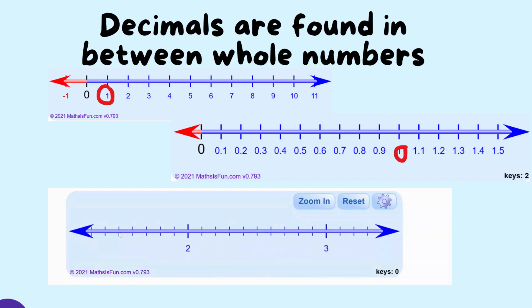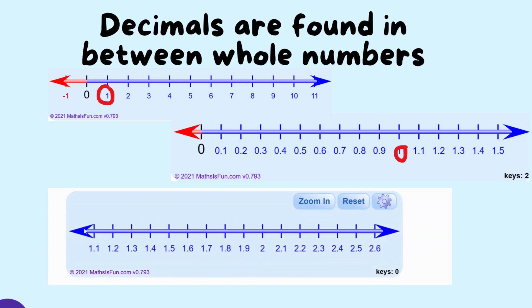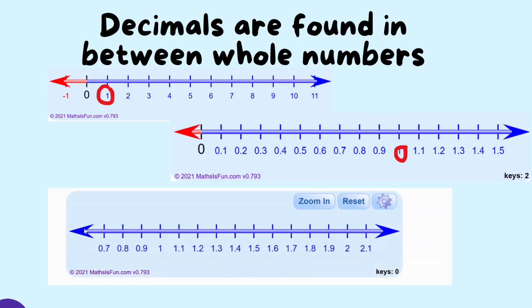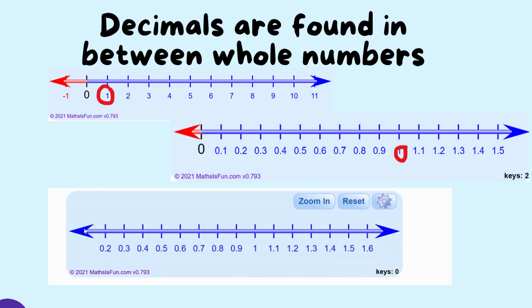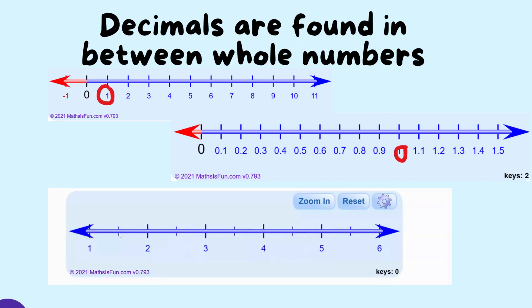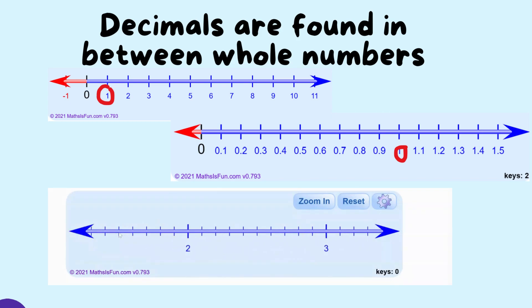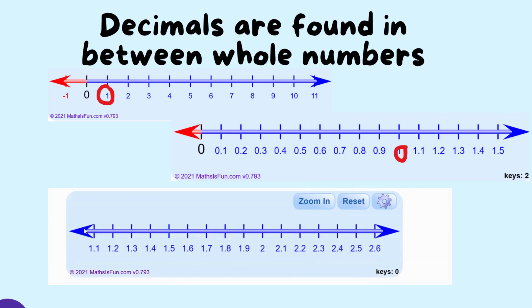Decimals can be found in between whole numbers. Decimals are the divisions in between the whole numbers. For example, going from 0 to 1, or 1 to 2 — in between those numbers, you'll find decimal numbers.